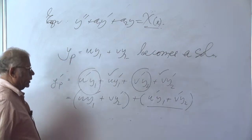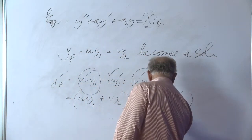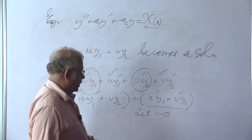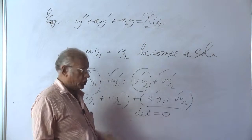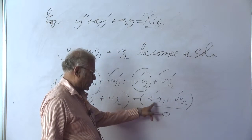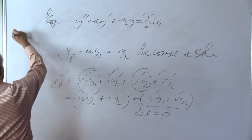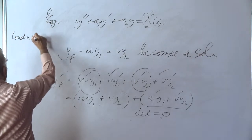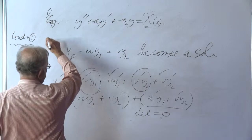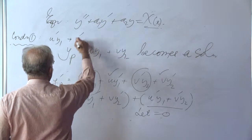Since u and v have to be chosen carefully, we impose a first condition: we stipulate that u′y₁ + v′y₂ = 0. This is Condition 1 to be imposed on u and v. We write down this condition and hold it for subsequent use.